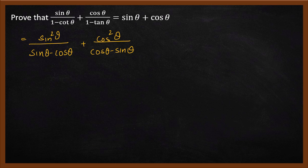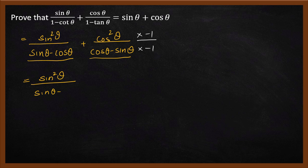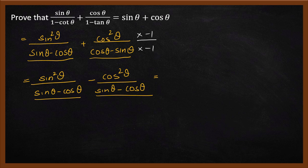Is it correct? Notice that the first denominator is sin theta minus cos theta, and the second denominator is cos theta minus sin theta — these are the same but with opposite signs. To fix this, we multiply the numerator and denominator of the second term by minus 1. So we get sin squared theta minus cos squared theta, all divided by sin theta minus cos theta.